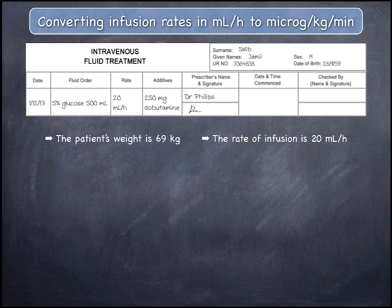The order displayed shows that a patient is ordered dobutamine 250 milligrams in 500 mLs of 5% glucose, to infuse at 20 mLs per hour. The case notes, which are not displayed on the screen, tell you that the patient's weight is 69 kilograms.